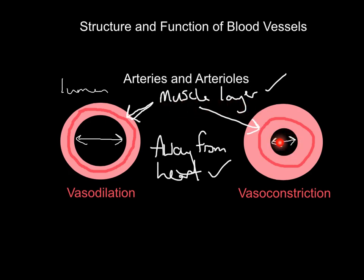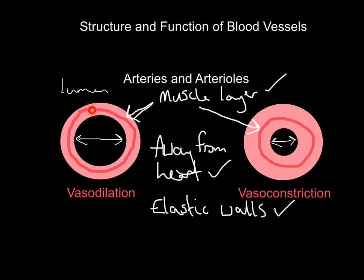Linked to this muscular layer and the ability to vasodilate and vasoconstrict, arteries also have elastic walls. Elastic means they can stretch and recoil back to their original size and shape again. That's very important for vasodilation and vasoconstriction — not just the muscles but the walls themselves are elastic.